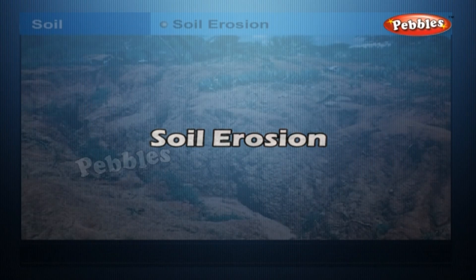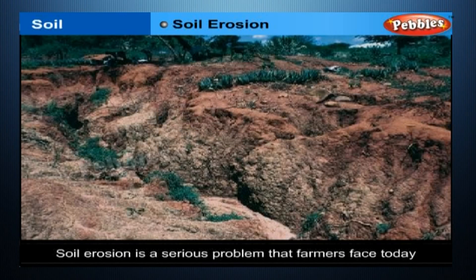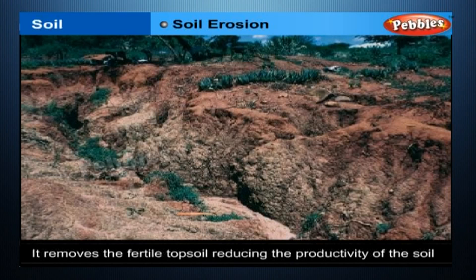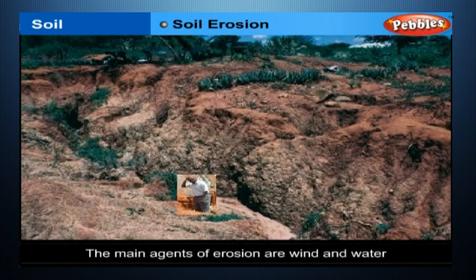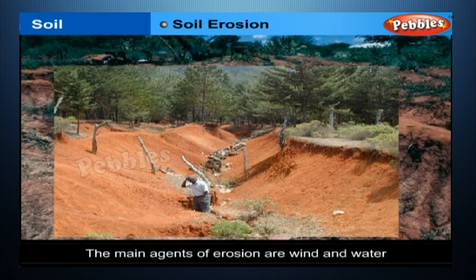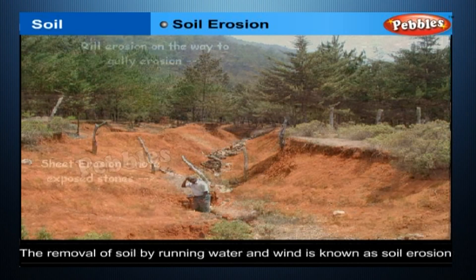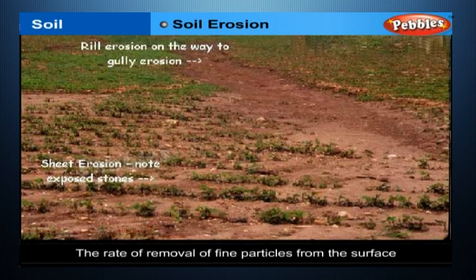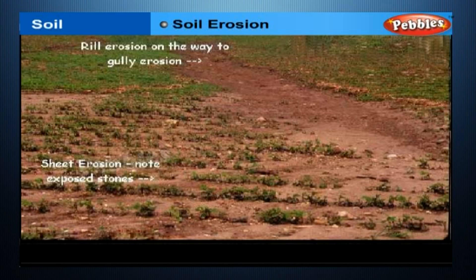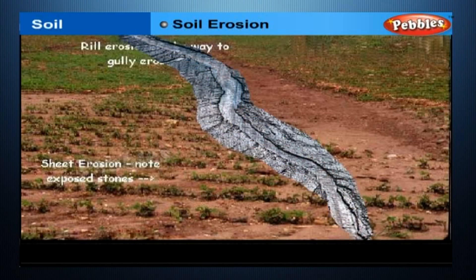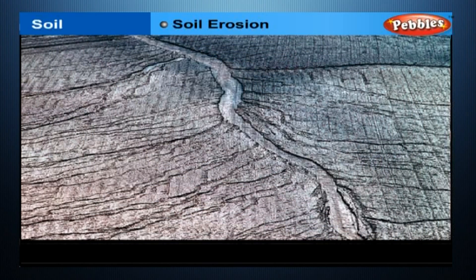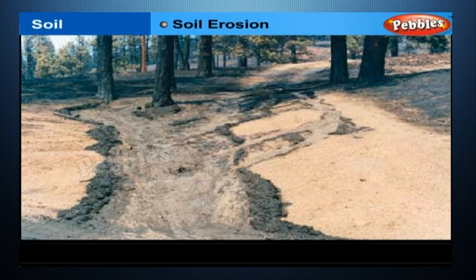Soil erosion is a serious problem that farmers face today. It removes the fertile topsoil, reducing the productivity of the soil in that area. The main agents of erosion are wind and water. The removal of soil by running water and wind is known as soil erosion. Generally, the rate of removal of fine particles from the surface is the same as the rate of formation of soil. But sometimes there may be a disturbance in this balance, usually man-made, which may lead to a greater rate of removal of soil, resulting in an increase in soil erosion.